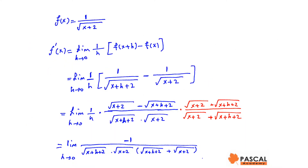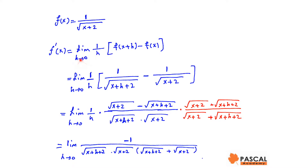Let's find the derivative of f(x) = 1 over the square root of x plus 2 using the definition of the derivative. We know f'(x) is the limit of f(x+h) minus f(x) over h as h approaches 0.